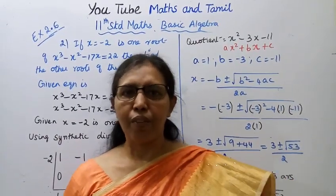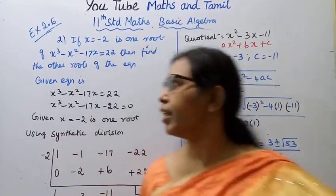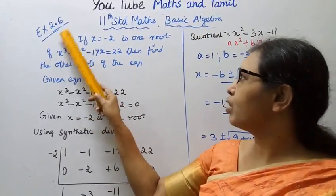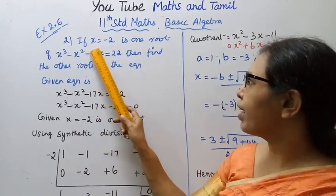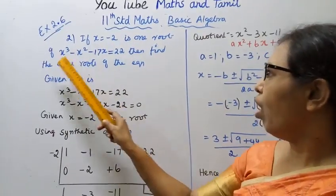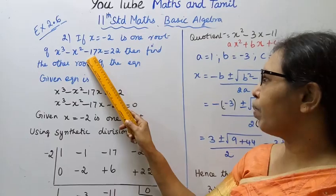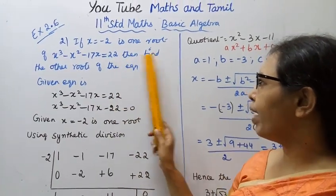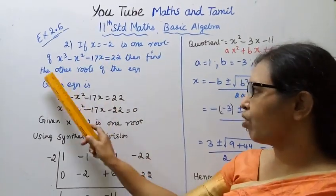Hello students, welcome to Maths and Tamil channel. 11th Standard Maths Basic Algebra Exercise 2.6: If x equal to minus 2 is one root of x cube minus x square minus 17x equal to 22, then find the other roots of the equation.